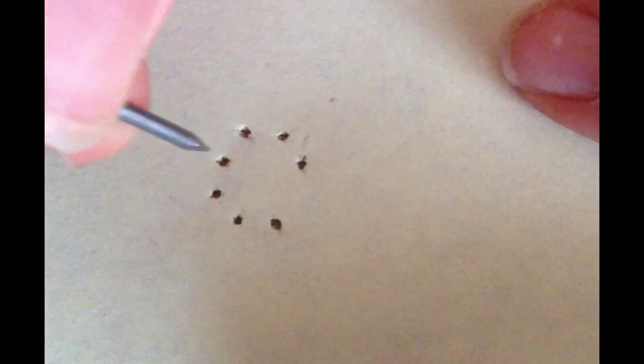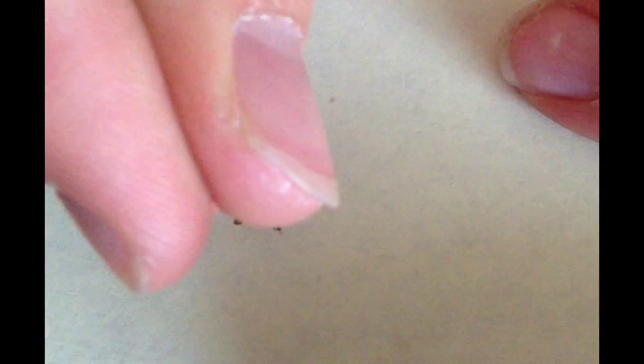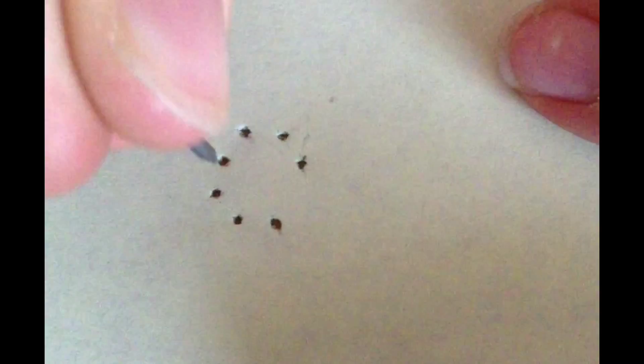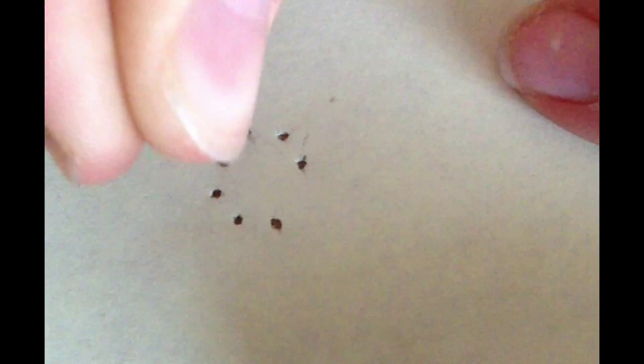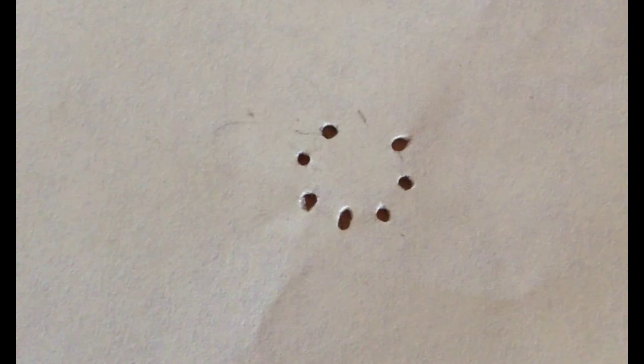So after you have the dots labeled on the sticky note, you then take a nail and poke each hole out. This will be the stencil to trace the tube pin layout on whatever you will use as your base.